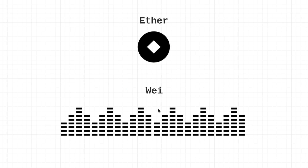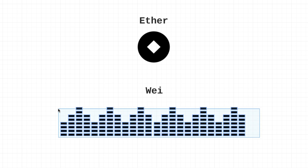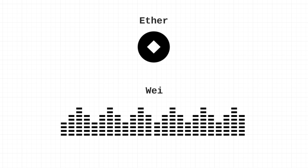Another interesting note is that ether can be further divided into smaller units called wei. One ether is equal to one quintillion wei — that is 10 to the 18th power. This diagram is not exactly accurate; I decided it was best not to render one quintillion wei on screen. Wei is the most base, or most atomic, unit of ether, meaning you can't split up a wei.